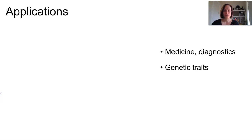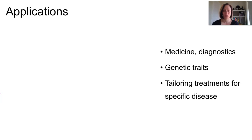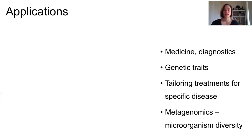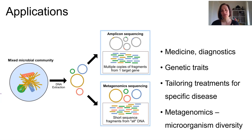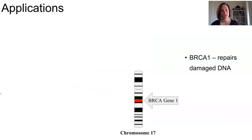Sequencing can be used in medicine for diagnostics, for tracing traits through families, and for tailoring treatments that work for specific sequences in cancer cell lines. It's used in metagenomics, which looks at environments and determines the microbial genomes and diversity from places ranging from soils to gut bacteria. DNA sequencing can also be used to determine the genetic risk of a disease appearing in a family — for example, BRCA1, the breast cancer type 1 susceptibility protein, coded for by the BRCA1 gene and expressed in breast and other tissue, where it repairs DNA.